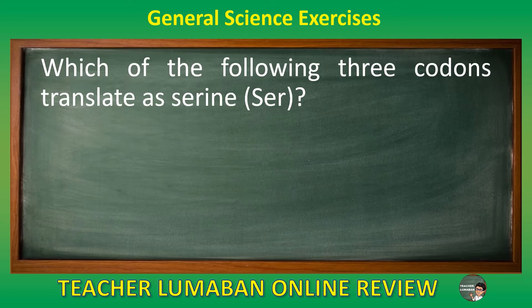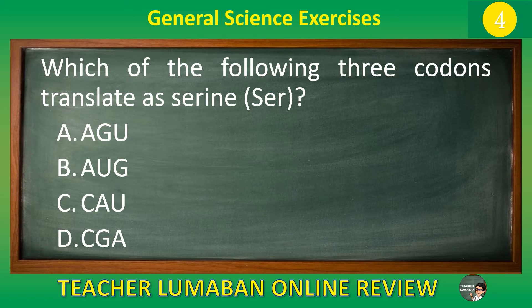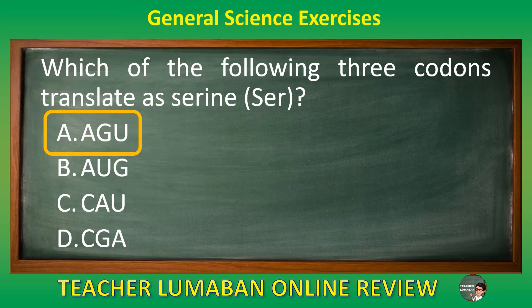Which of the following three codons translate as serine (ser)? Letter A AGU. Letter B AG. Letter C CAU. Letter D CGA. The correct answer is letter A, AGU. AGU is the three codon translated as serine (ser).